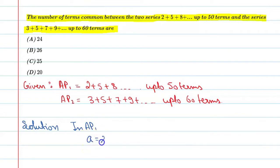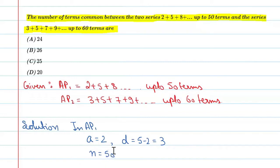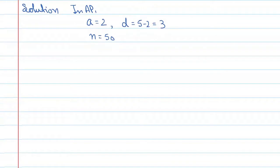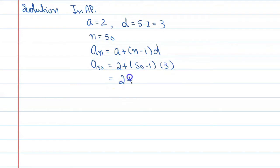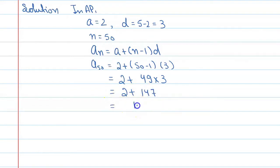For AP1: the first term 'a' is 2, and the common difference d equals 5 minus 2, which is 3. Since it goes up to 50 terms, we take n equals 50. Using the general term formula: a₅₀ = a + (n−1)d = 2 + (50−1)×3 = 2 + 49×3 = 2 + 147 = 149. So the last term, the 50th term of AP1, is 149.